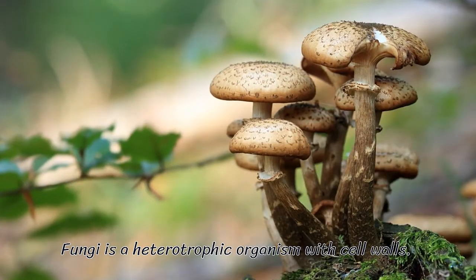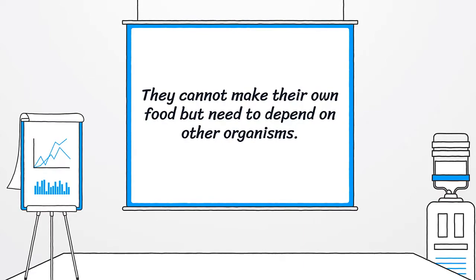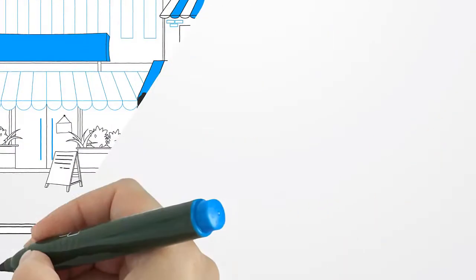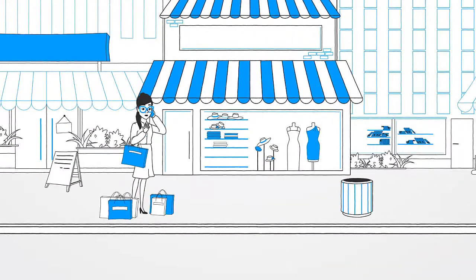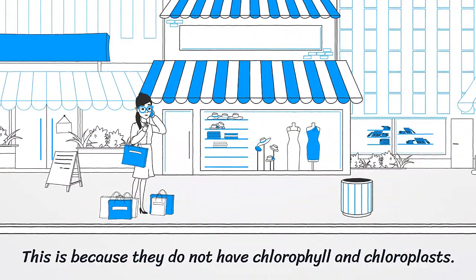Fungi is a heterotrophic organism with cell walls. They cannot make their own food but need to depend on other organisms. This is because they do not have chlorophyll and chloroplasts.